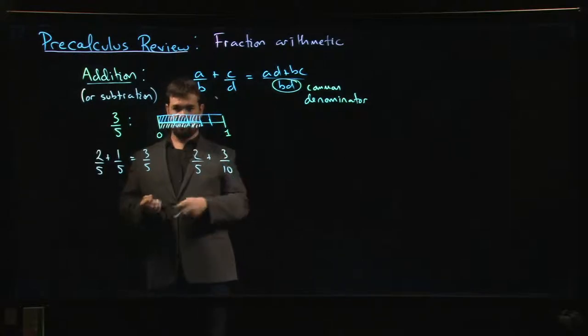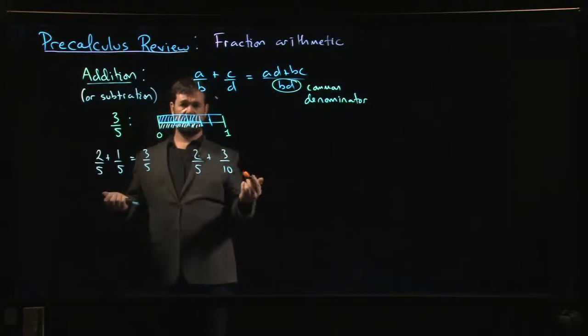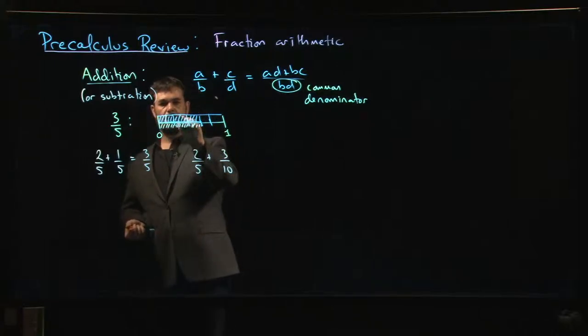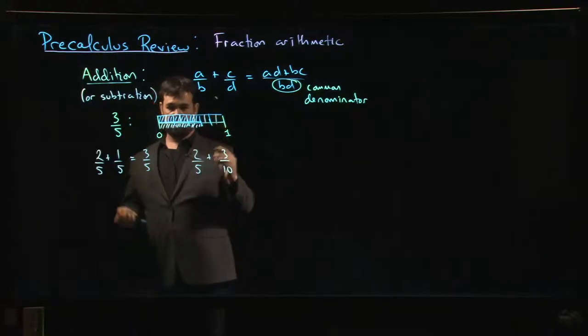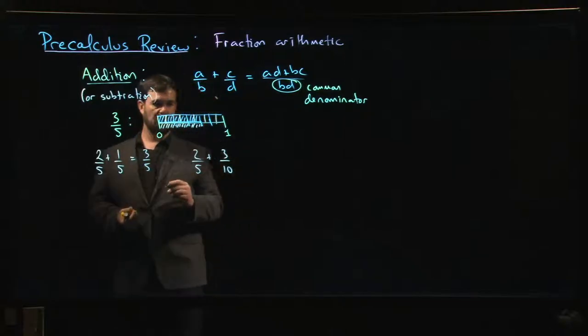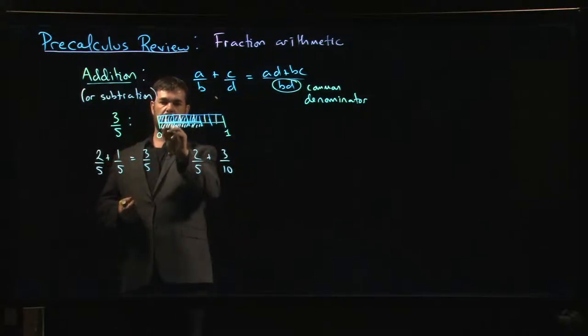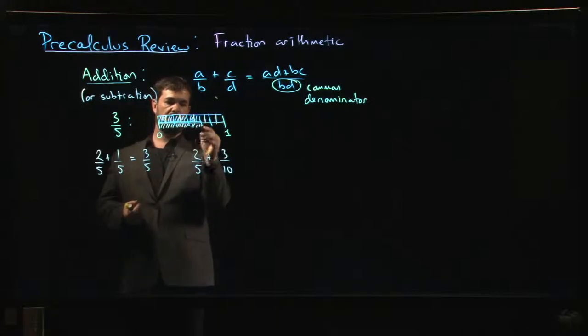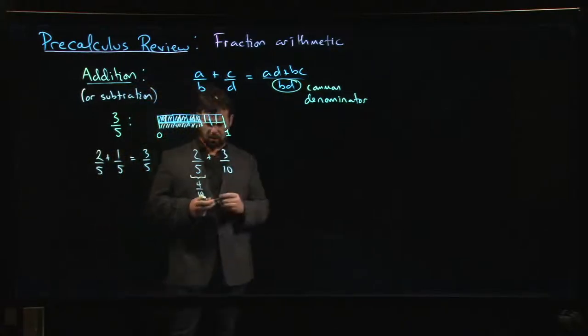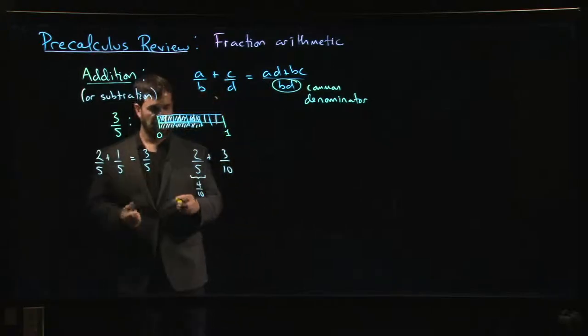The key is that if I have something that's divided into five pieces, well, there's an easy way to get ten pieces. I take each of the five pieces that I have and I divide it in half. Now I have ten pieces. Then my two-fifths becomes four of the ten pieces, so two-fifths is the same as four-tenths.